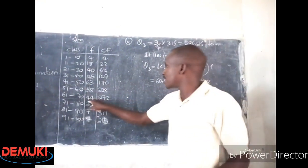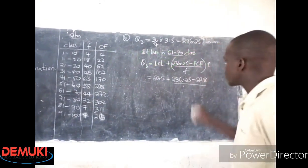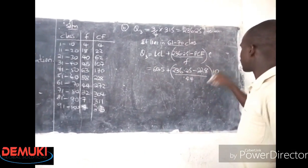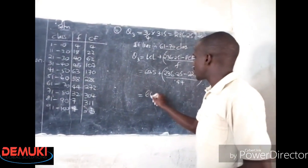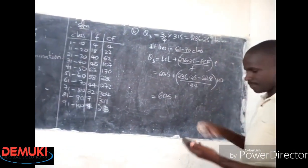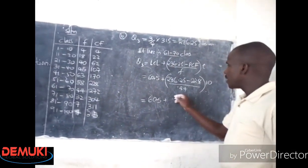Over the class frequency of that class, which is 44, times the class size, which is constant at 10. So this becomes 61.5 plus 236.25 minus 228, which is 8.25.